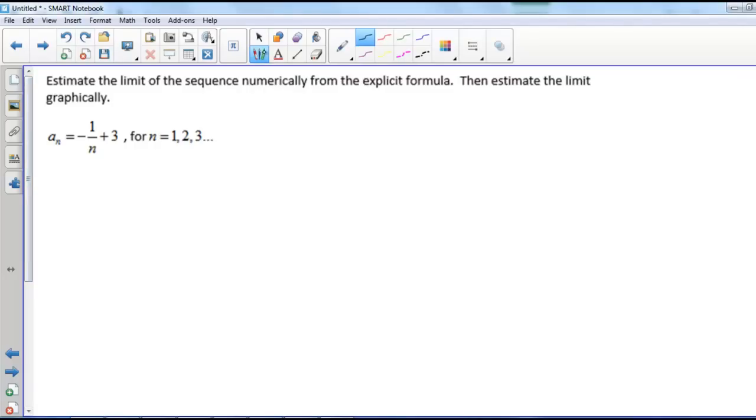So if we make a table, we have n and a sub n. If n equals 1, then we have negative 1 divided by 1, it's negative 1 plus 3, and that is 2. If n equals 2, then we have negative 1 half plus 3, so that's 2.5.